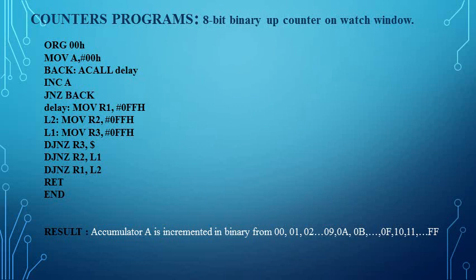The purpose of the delay in the counter program is that without a delay between two counting values, it becomes very difficult to identify the difference between the values. So we call a delay subroutine. After that, we use the instruction INC A, which increments the value of register A by one. The fourth instruction is JNZ back, which keeps incrementing the value of A until it becomes zero.